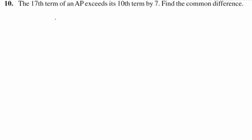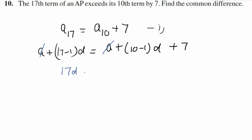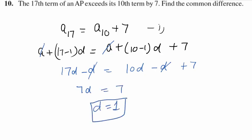Next question: The 17th term of an AP exceeds its 10th term by 7. Find the common difference. Substituting the formula: a plus 16d equals a plus 9d plus 7. The a cancels out, leaving 16d minus 9d equals 7, so 7d equals 7 and d equals 1. The common difference is 1.